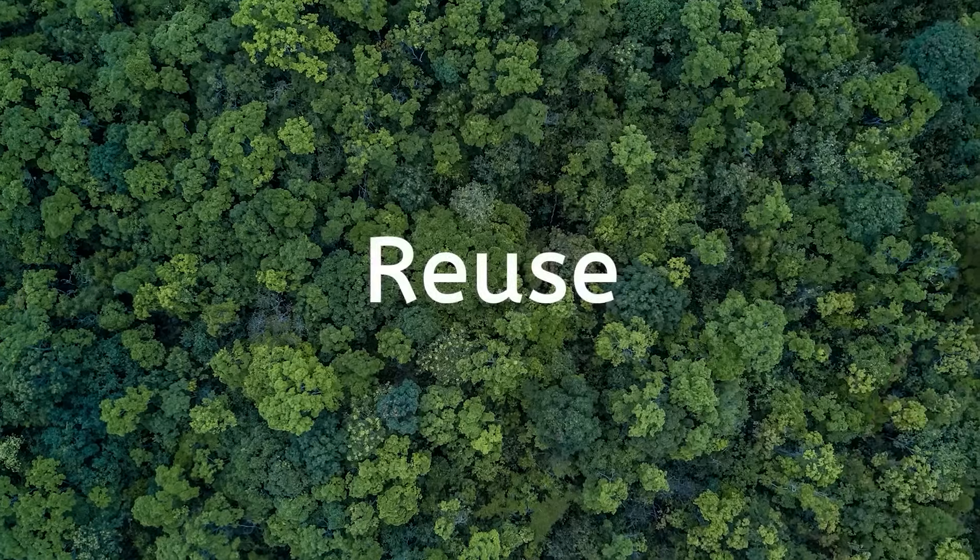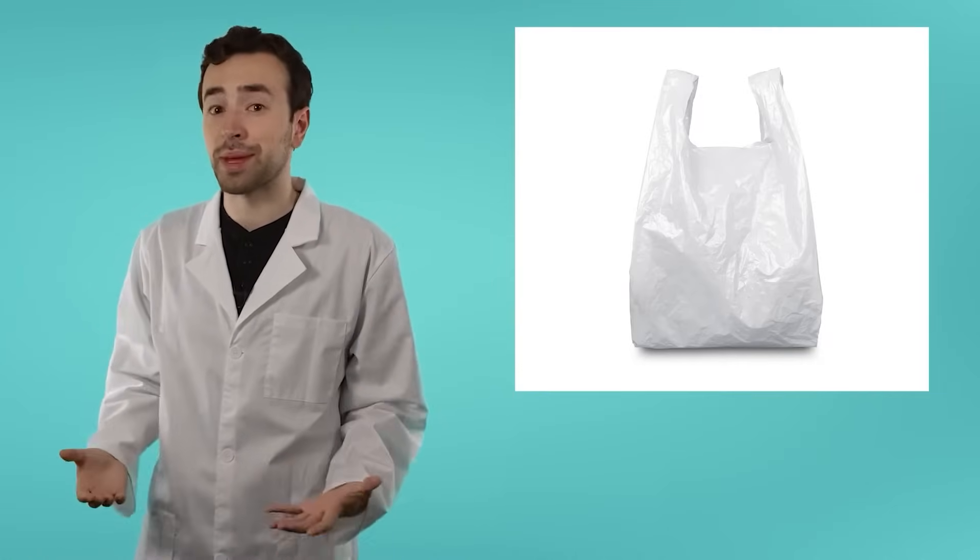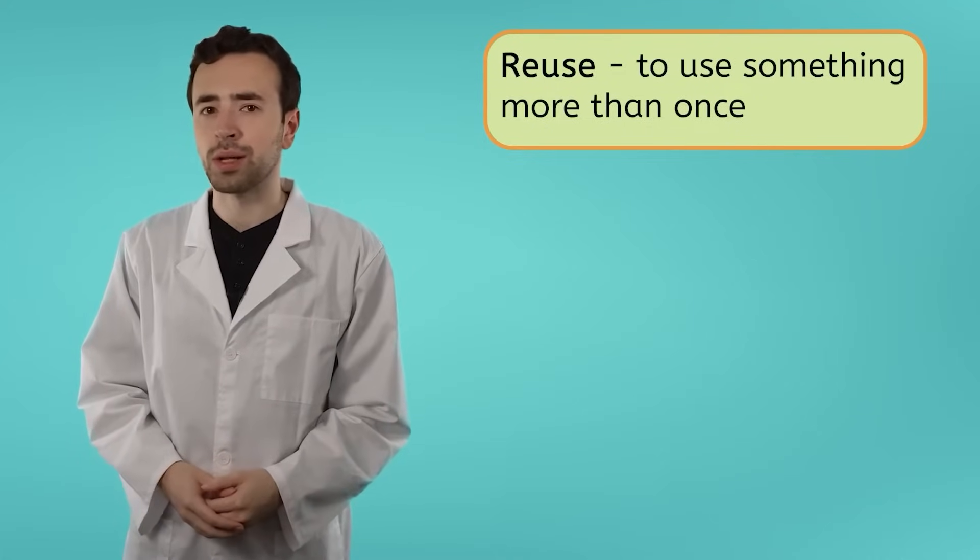Of course, you can only reduce so much. Most things you'll never be able to reduce down to zero and that's okay. Once you've reduced all you can, the next best thing you can do is reuse. If you already have something, like a plastic bag, then you can't exactly reduce it to make less of it. So the second best thing you can do is reuse it. Reusing means to use something more than once.